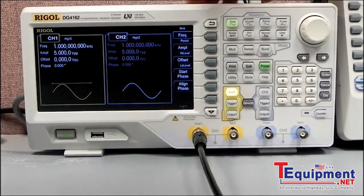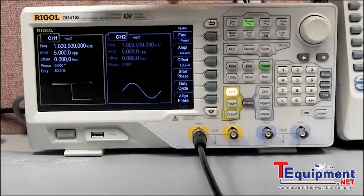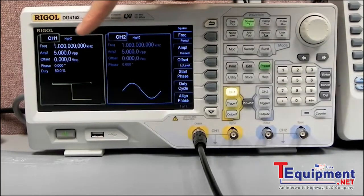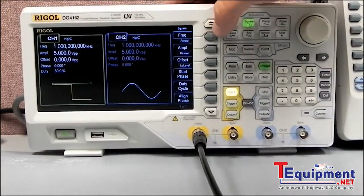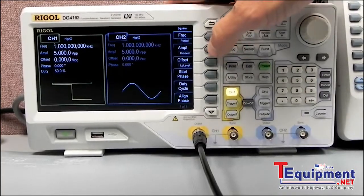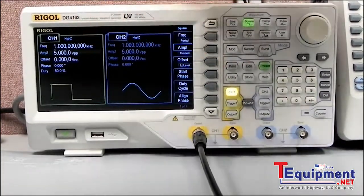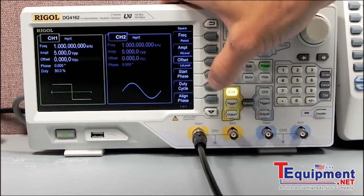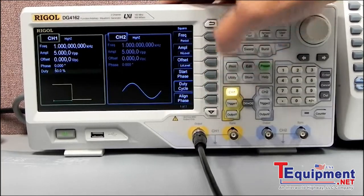So let's just take a look at entering some of the data. Let's pick a square wave, and you can see now we have frequency highlighted in Channel 1. We can select frequency, or we can select amplitude. You'll see the marker move down, or offset, start phase, duty cycle, align phase.